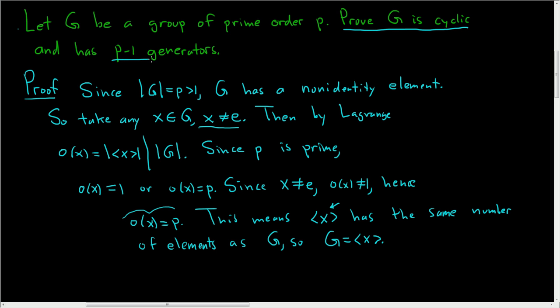Let's take care of this now. So we know that G has P elements and we know that it has P minus 1 non-identity elements. We took any X in G that wasn't the identity and we showed it was a generator. So this holds for any X in G that is not the identity. Since there are P minus 1 choices for X, there are P minus 1 generators.